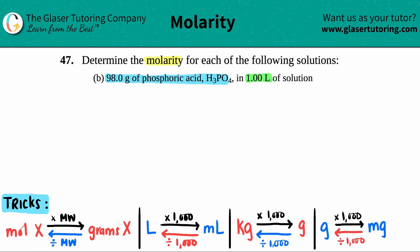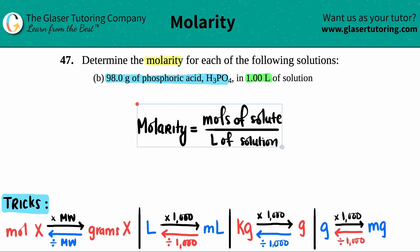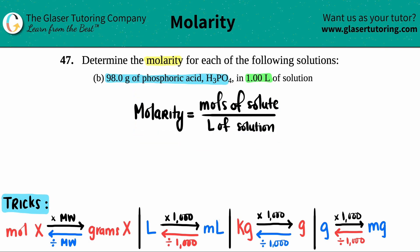We need to find the molarity, and they give us these values. A formula should be coming to mind: molarity equals the moles of the solute divided by the liters of solution. We usually think of this formula as capital M equals moles over liters. Just know that it's the moles of the solute—basically the solid that's going to be placed in your solution.